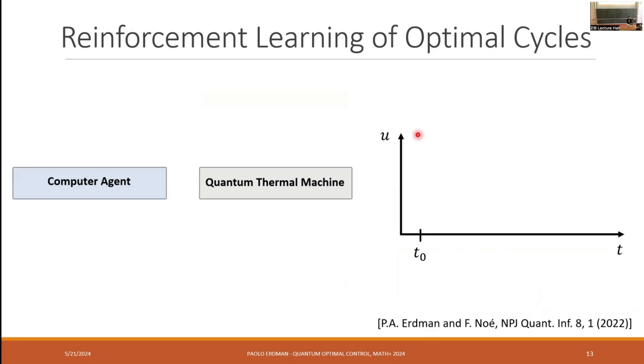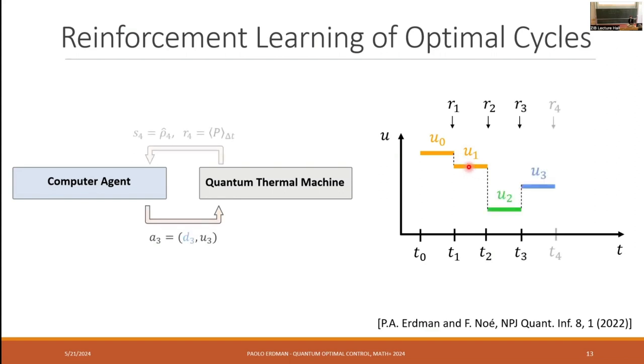So in practice, we can imagine here, we have control as a function of time. At some initial time, the heat engine will be in some state rho zero. And the computer agent will propose some control u that will be held constant for some time delta t. And this color orange means, for example, couple the system to the hot bath. Then it will receive as feedback what is the power that was developed in this time step dt. And based on this computer agent can choose, for example, a different value of u that will and still to be coupled, for example, to the hot bath, which is this orange color, and so on and so forth. So by iterating between the computer agent and the system, we can end up building this piecewise constant control.